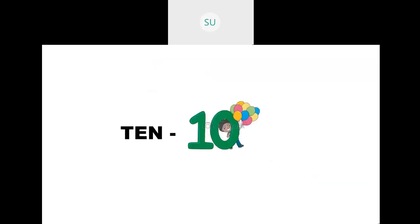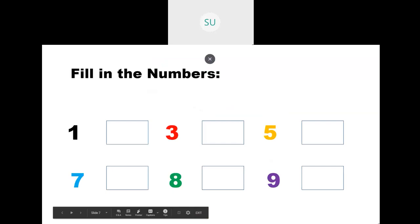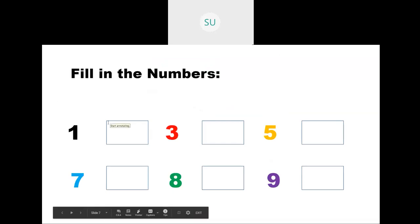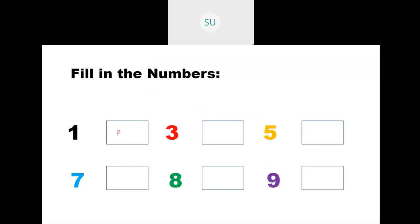After 9 we have 10. Then fill in the numbers — we did this last time. After 1 we have 2, after 3 then 4, 5, 6, 7 and 8. There is nothing between 7 and 8, and after 8 we have 9. There is an extra box with nothing. So these are the numbers from 1 to 9.